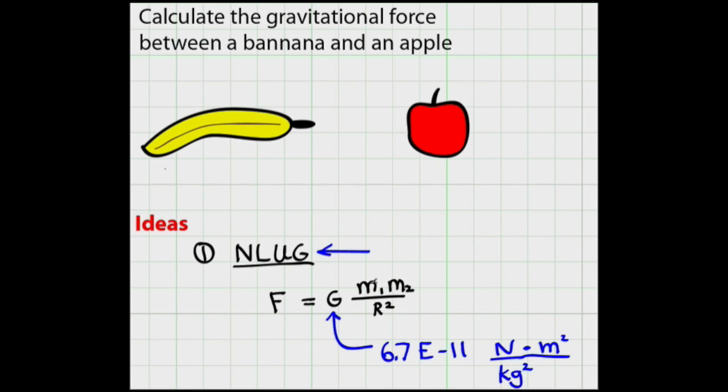I'm going to estimate that the mass of a banana is about one third of a pound, which is 450 grams divided by three, or about 150 grams. I'll estimate the mass of the apple is also about 150 grams. And I'll estimate the separation distance is one meter.